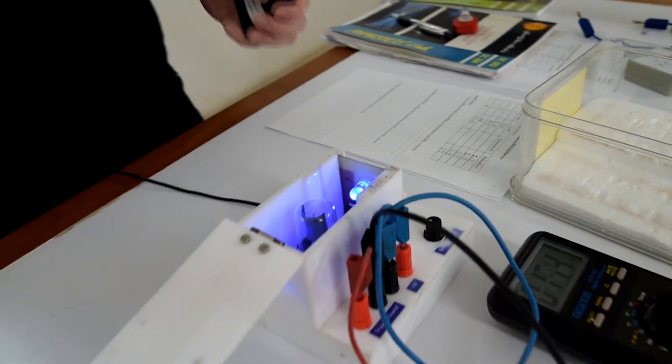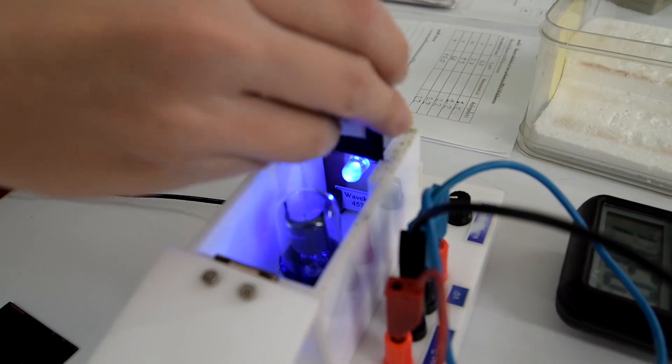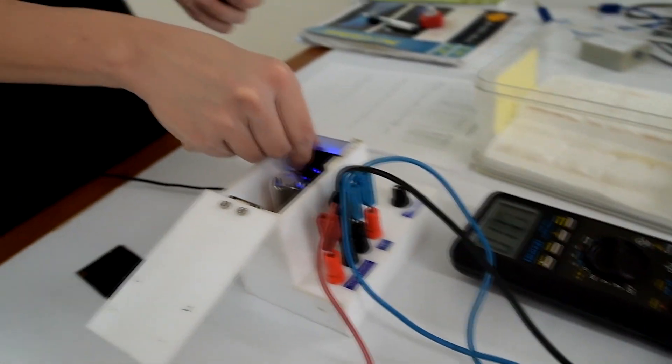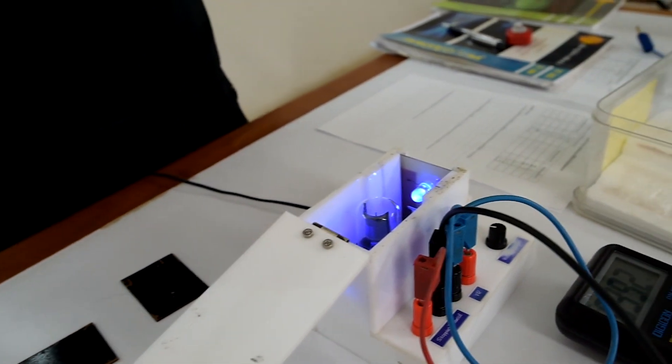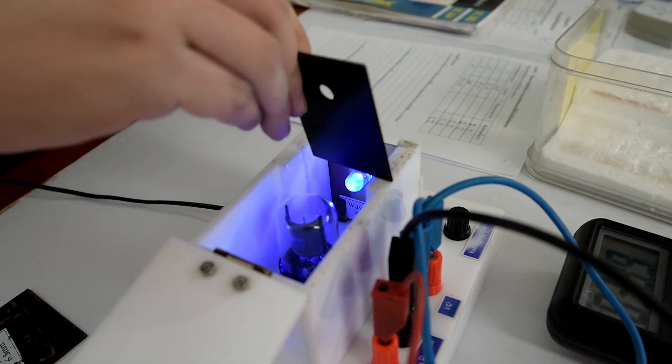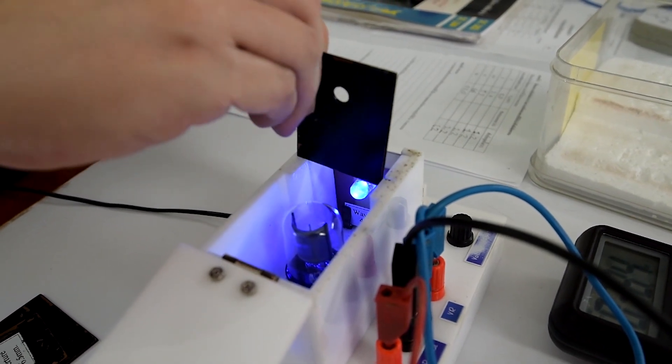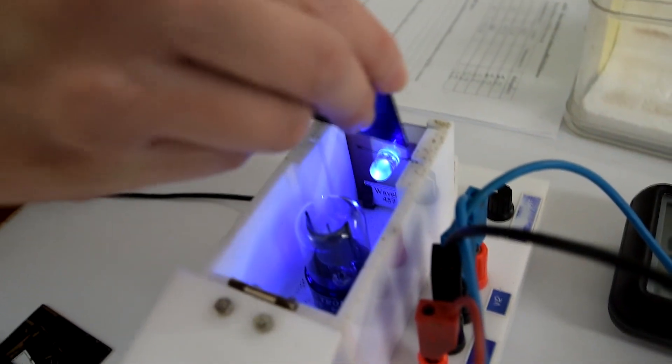Change the aperture diameter size and repeat the experiment until finished with all the apertures. The aperture diameter sizes are changed from 3 mm to 5 mm, then 6.5 mm, then 8 mm, and finally 10 mm.